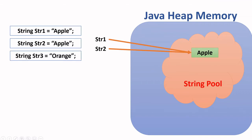The third line of code is 'String str3 = "orange"'. We're going to do the same thing — check if the value orange is in the pool, and if it's not, we'll add it to the pool and return a reference str3 that points at this value.